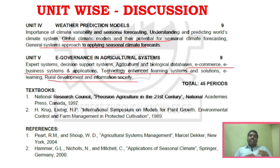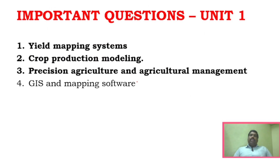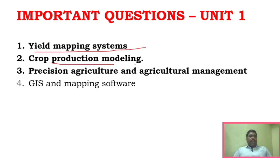Textbooks are not available for this subject, so notes and PDFs are used. Now we will see important question discussion. For Unit 1, the three important areas are: yield mapping system, crop production and modeling, and precision agriculture and agriculture management. We will also look at GIS and mapping software.